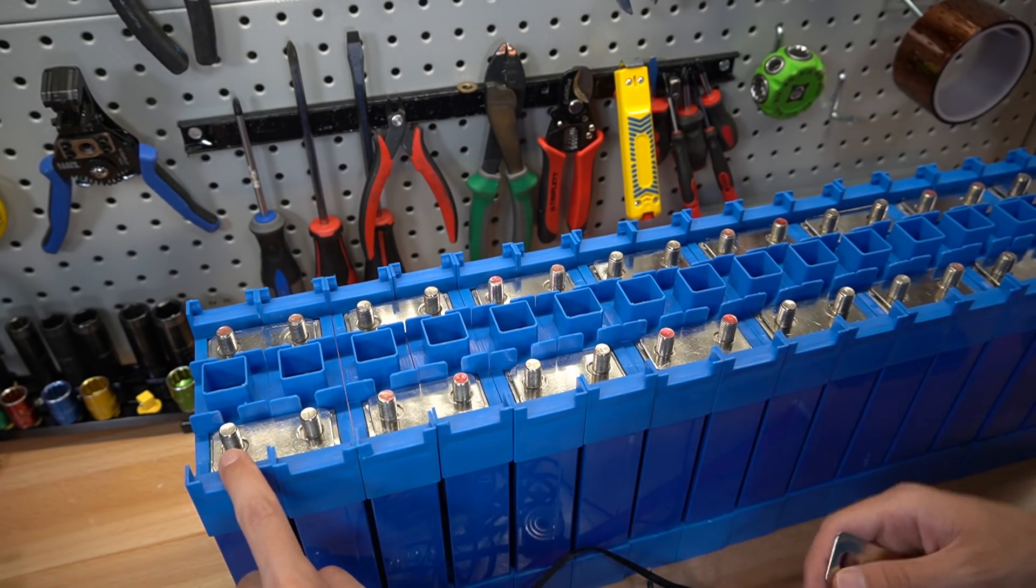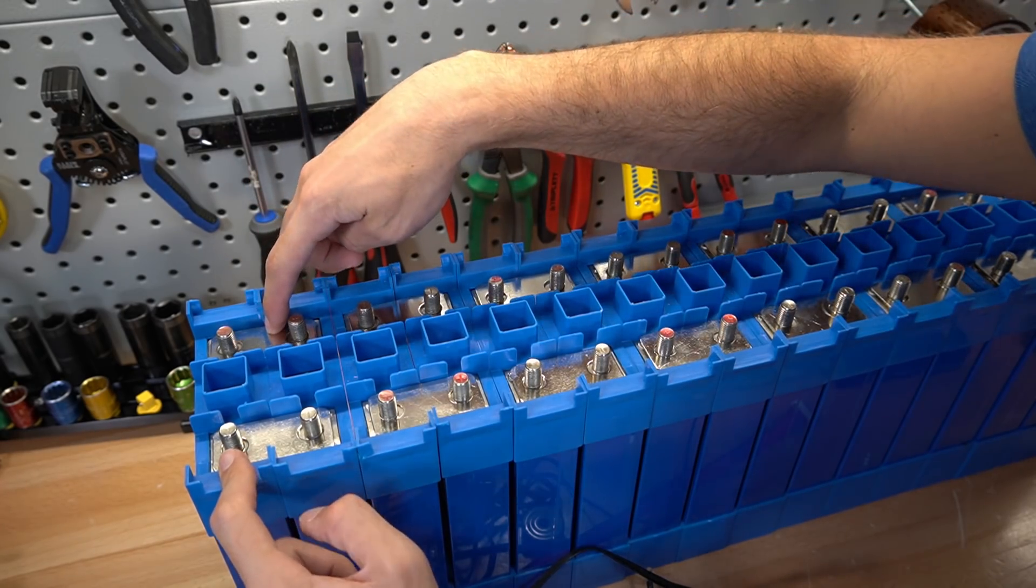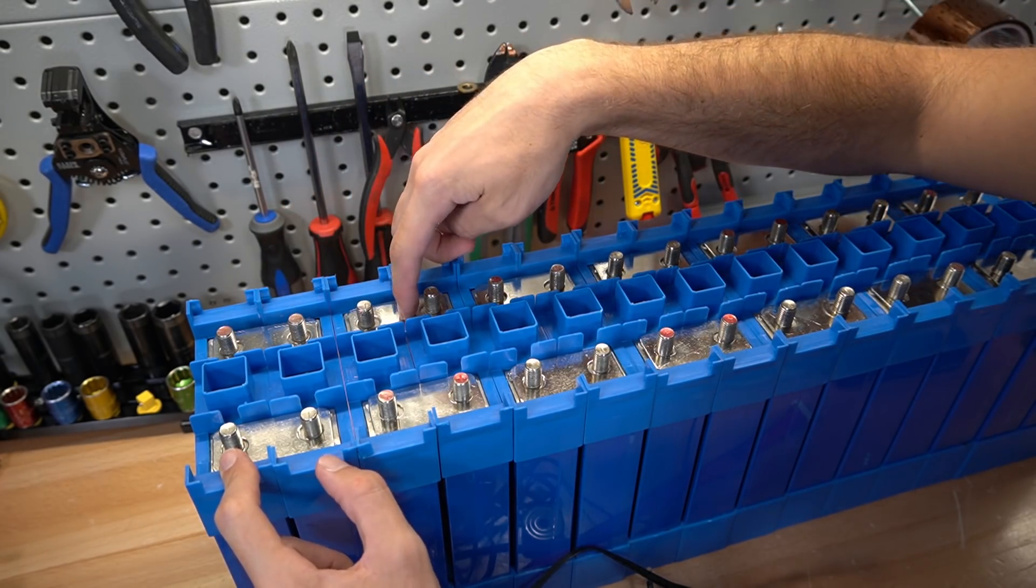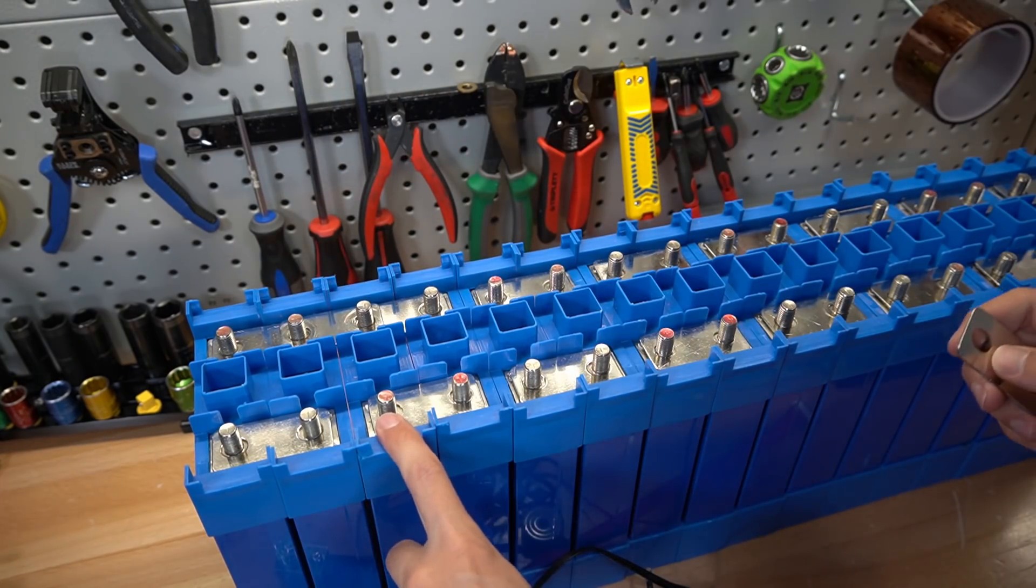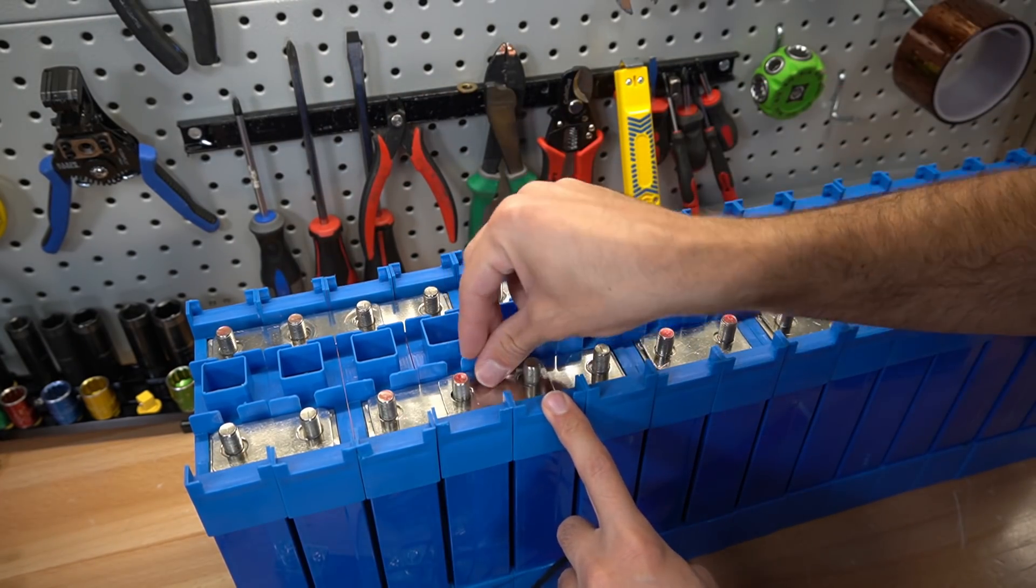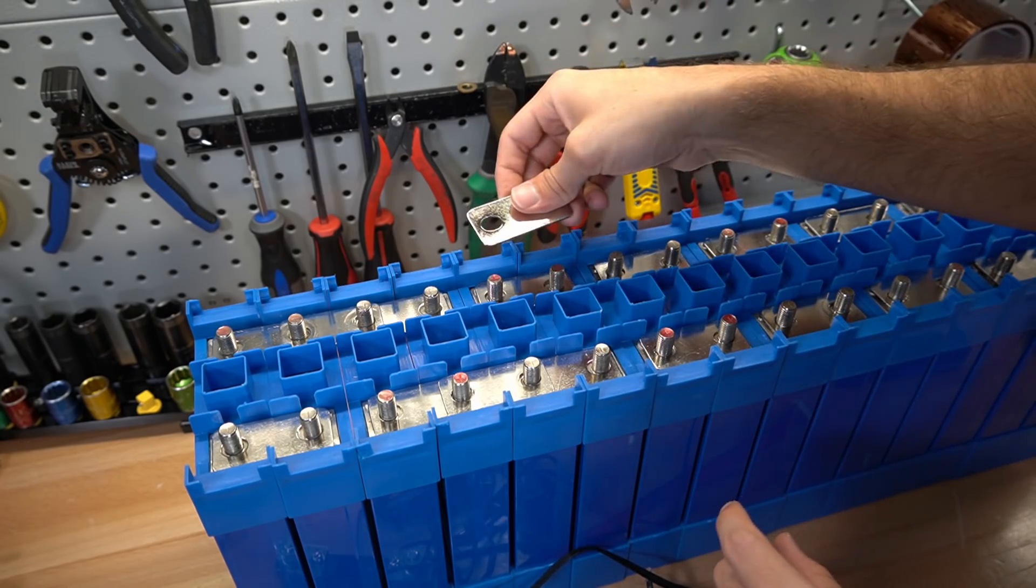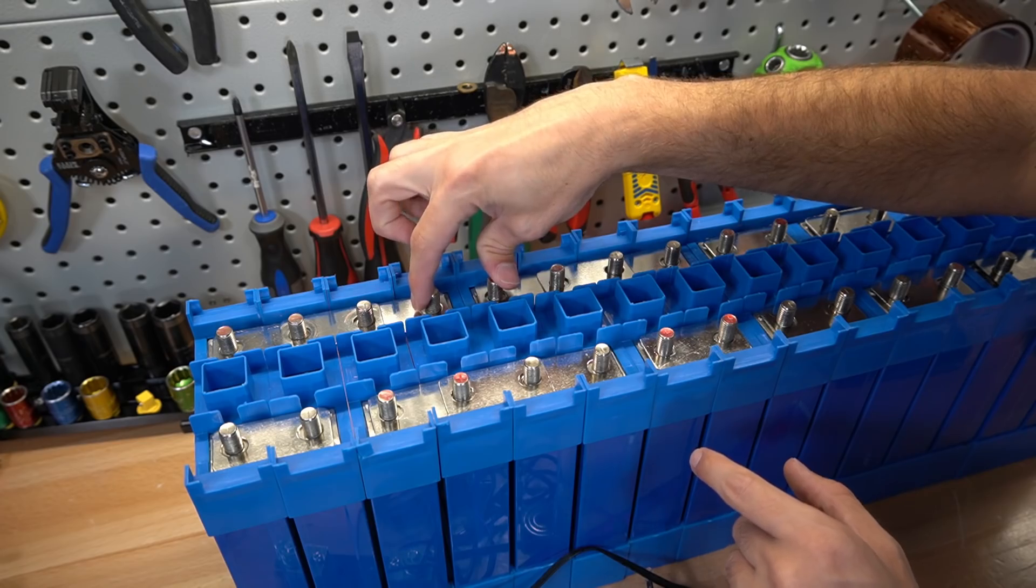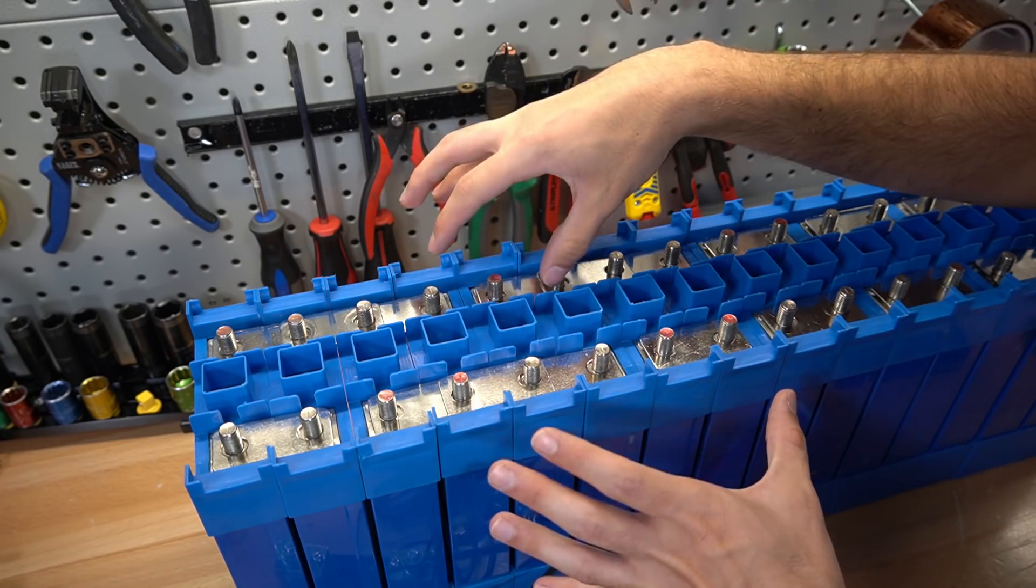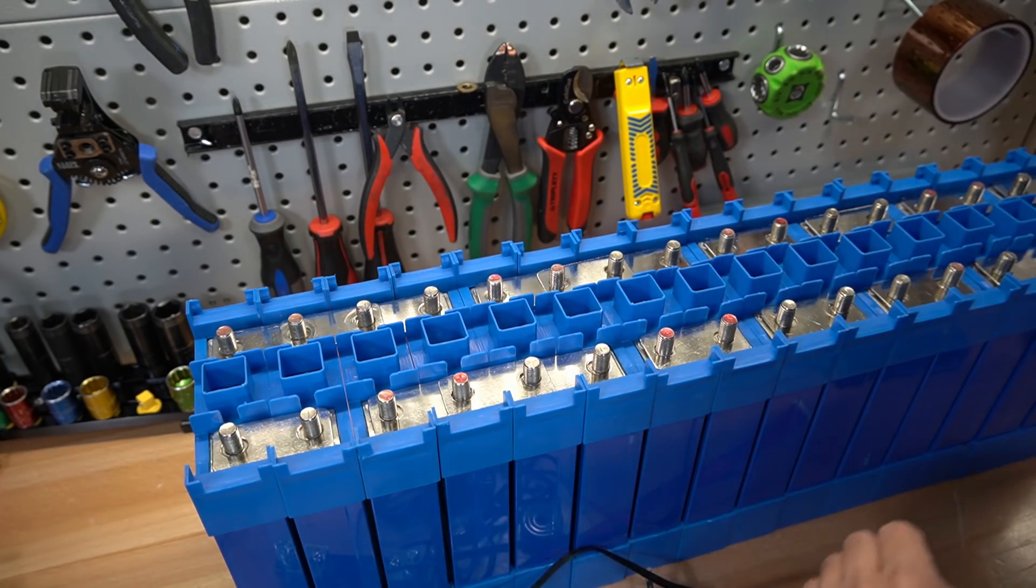This is going to be the main negative. We have first cell positive and we're going to connect this to second cell negative with a bus bar. Then from second cell positive to third cell negative we're going to connect the bus bar. If I were to accidentally put a bus bar right here we would have a massive short circuit. You need to be very careful when doing this step.